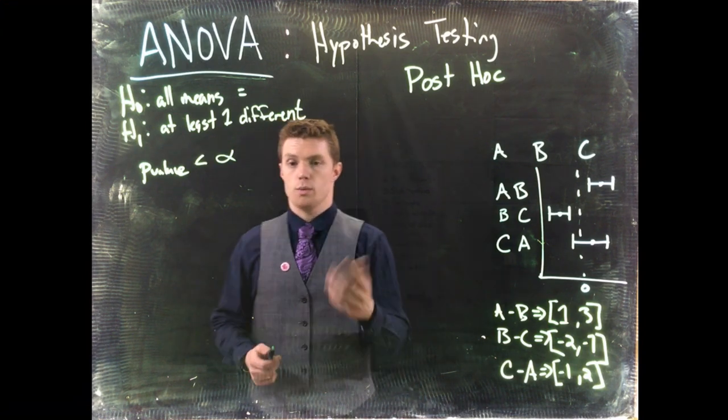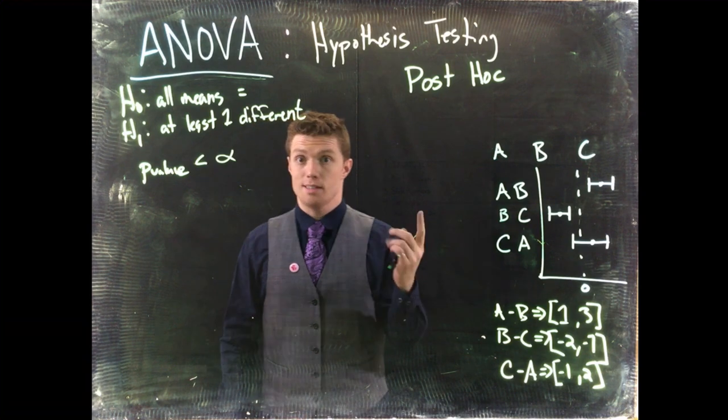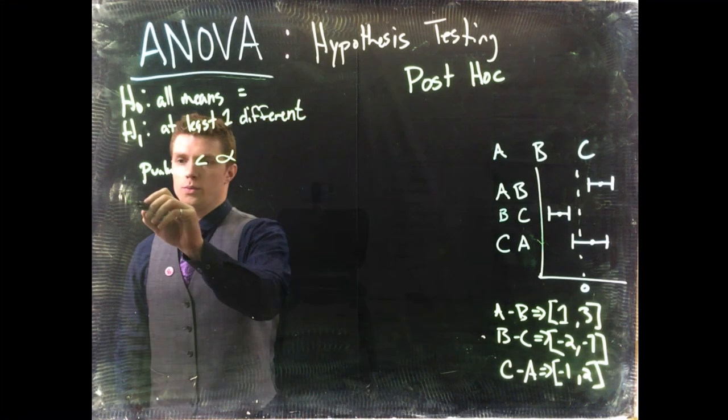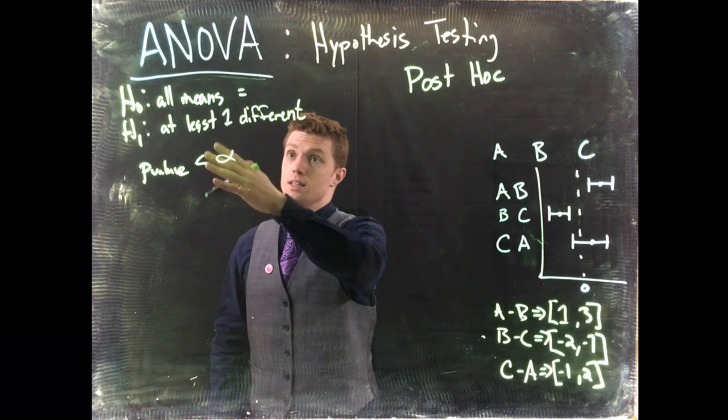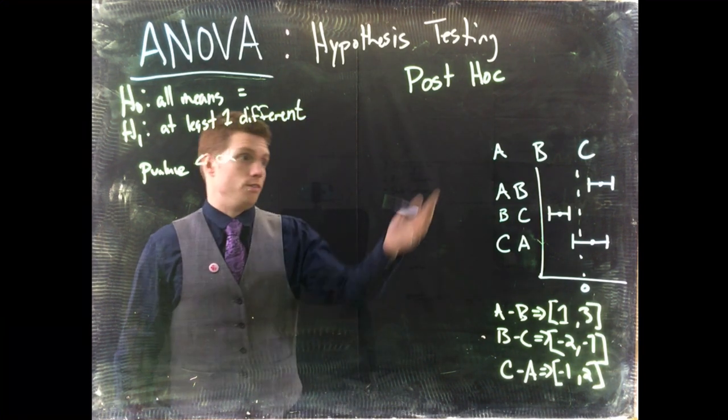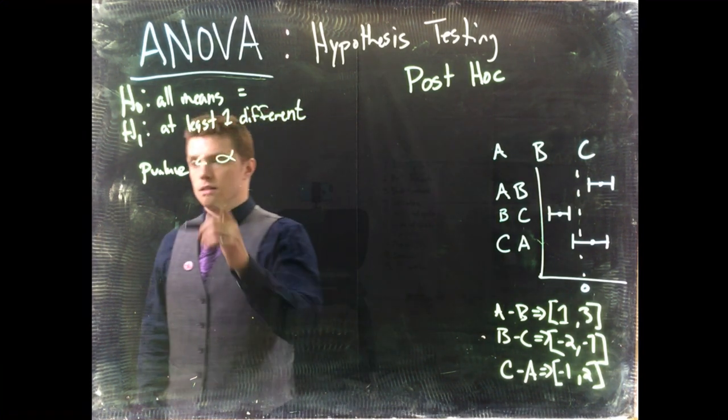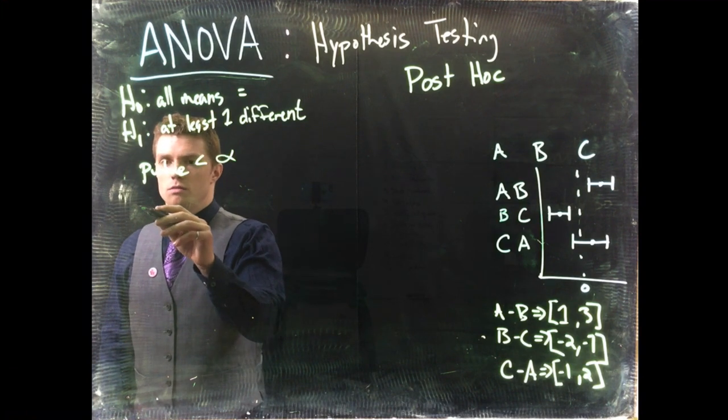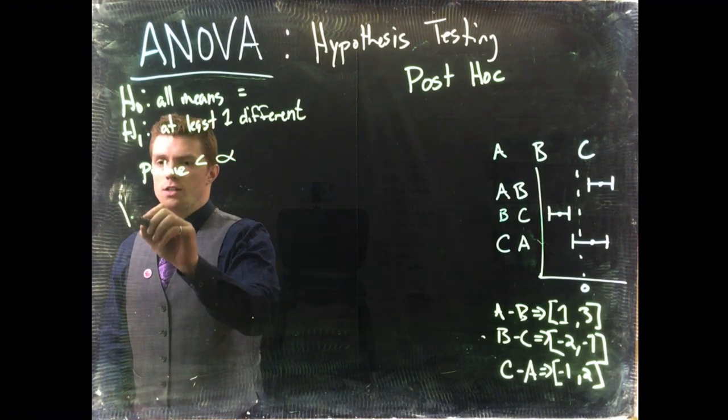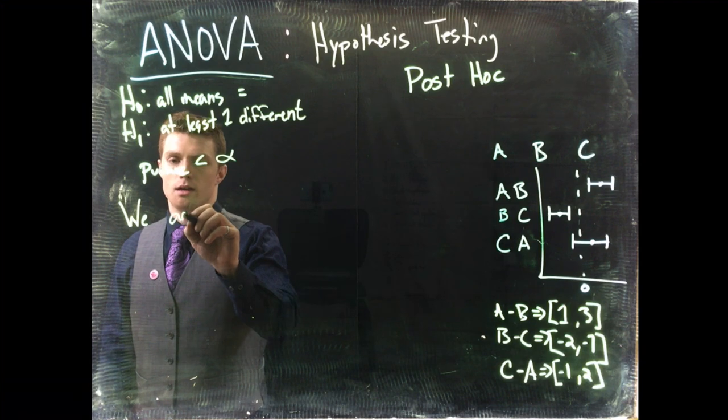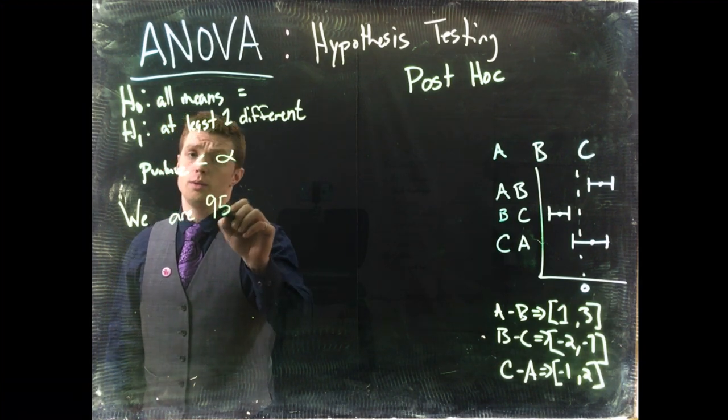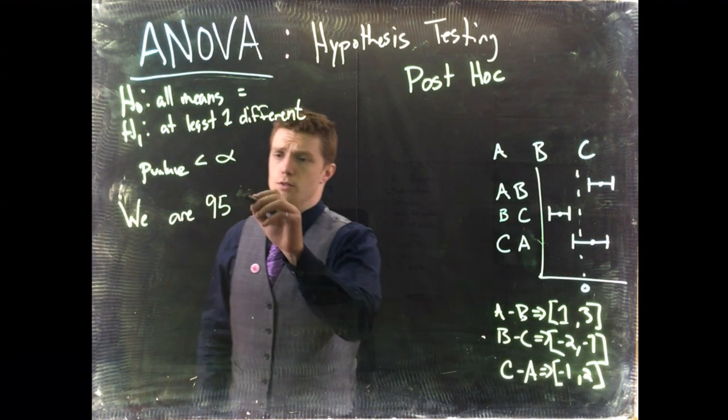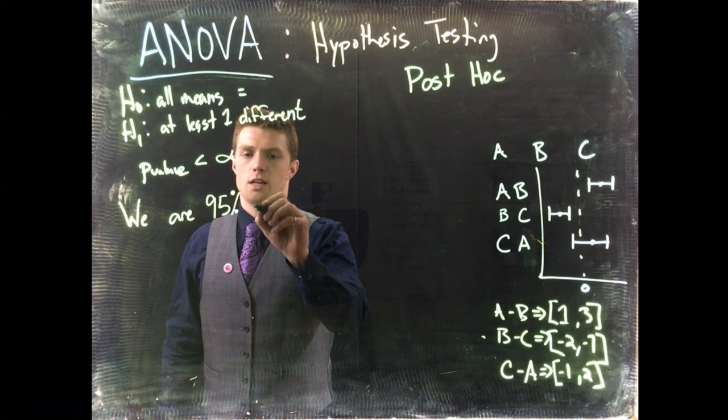Okay so here's what we do. We start off the same way as we have done before. So suppose that we have significant results, we said that at least one was different, we've got this graph. So we can start off with our statement. We are, let's suppose we did an alpha level of 0.05, 95% confident.